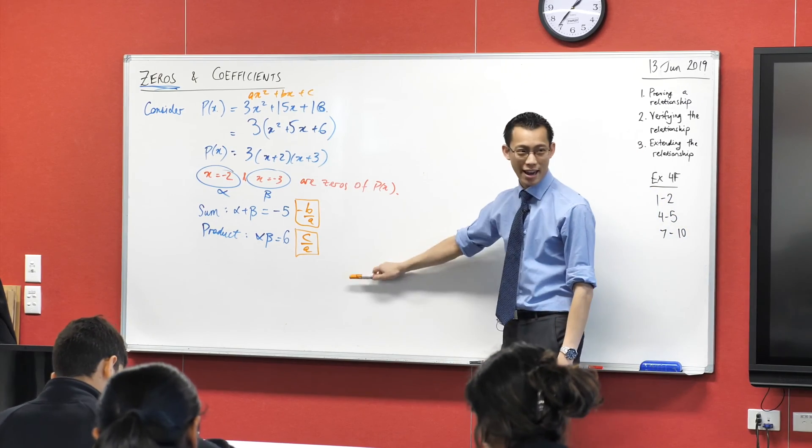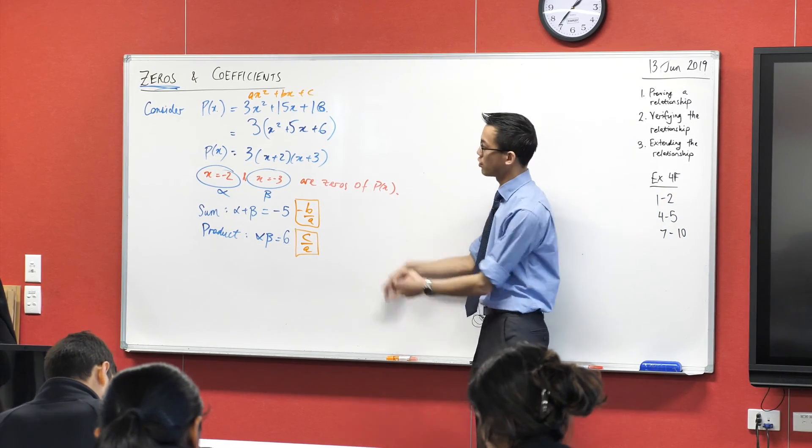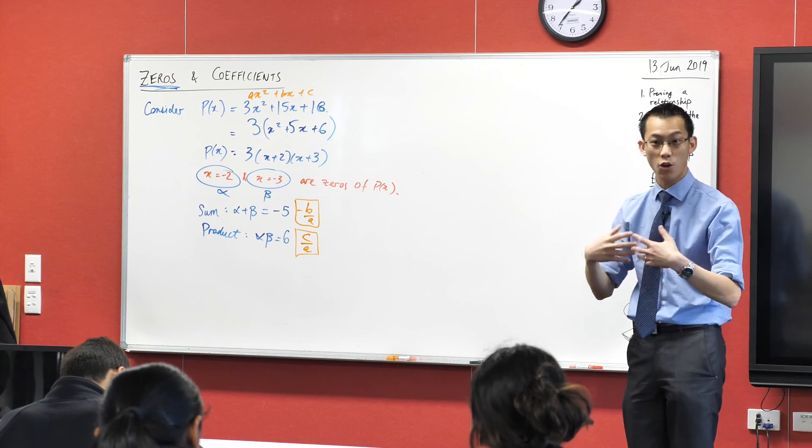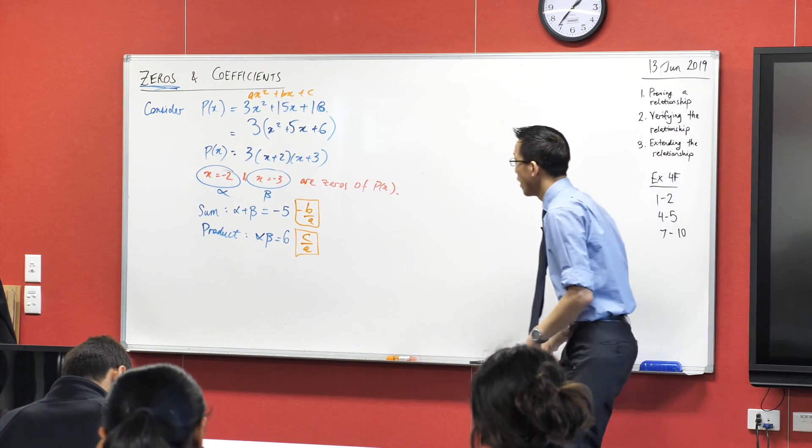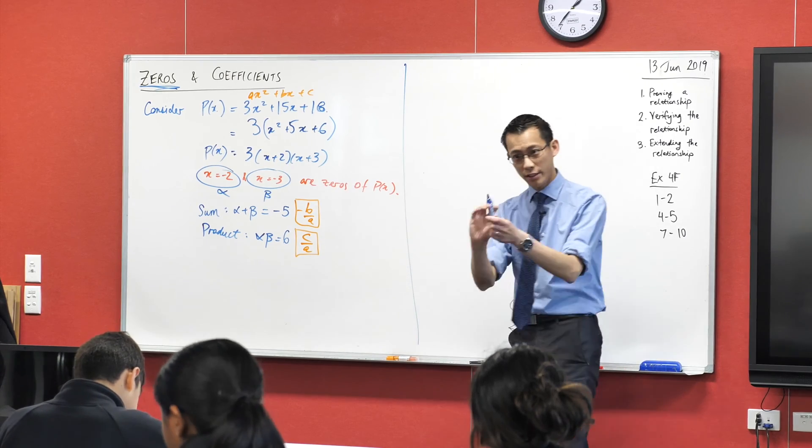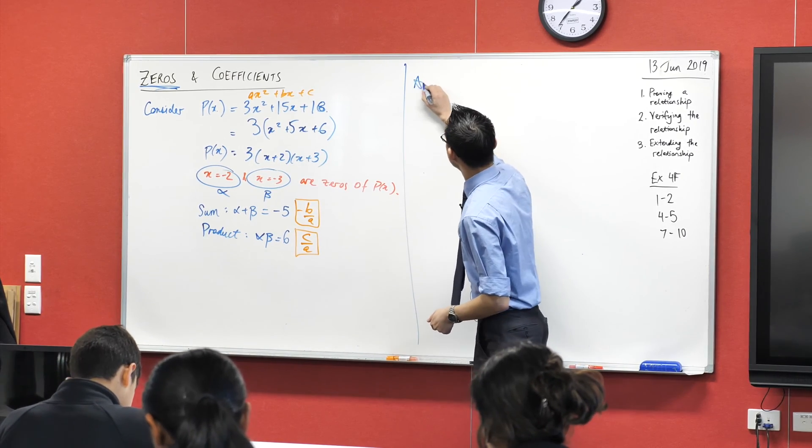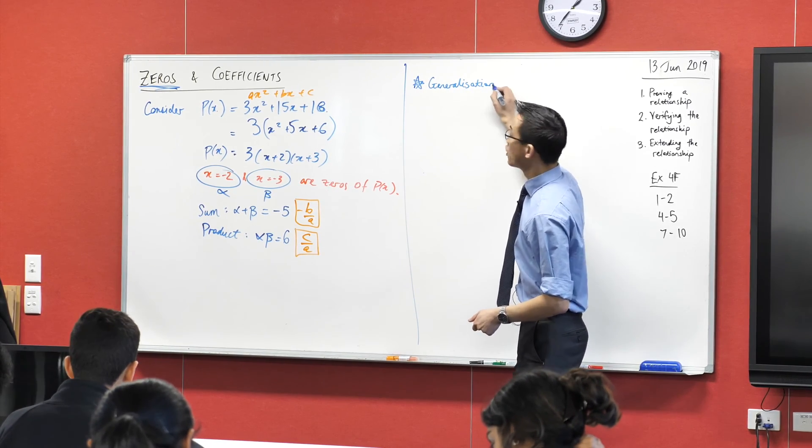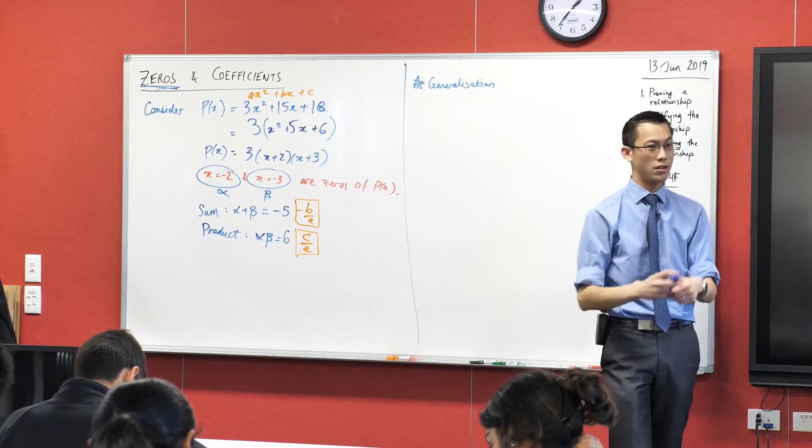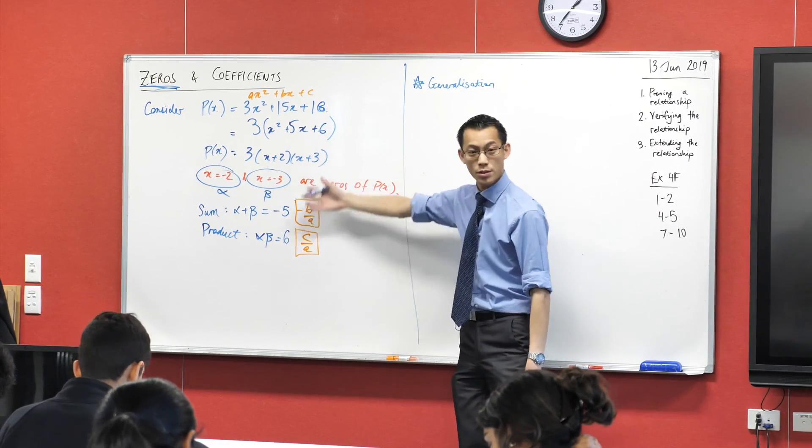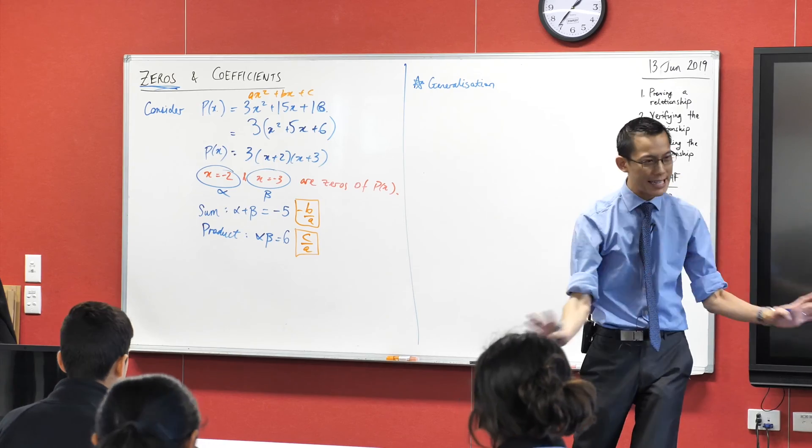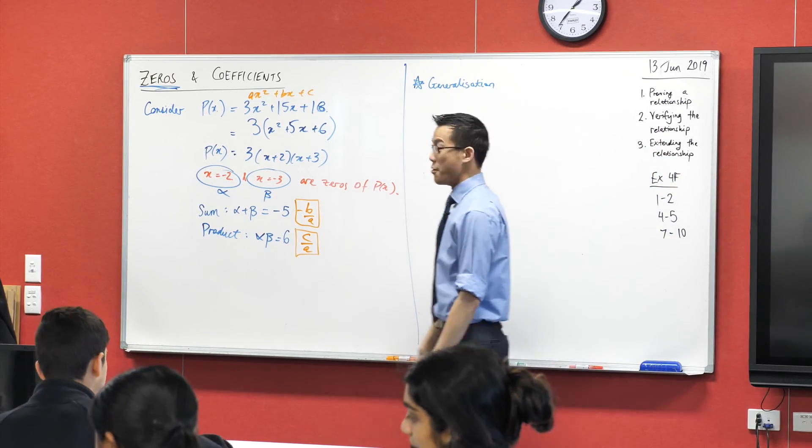In a couple minutes I'm going to tell you why we might care about this, but I actually want to not just look at an example of this. I want to prove that this is not just a coincidence. I want to see that this always happens. So underneath this make a little subheading for me and call this generalization, because what you just had a look at was something specific, a particular polynomial and what particularly happens with those numbers. Now I want to look at something general, what happens with any quadratic no matter what the numbers are.